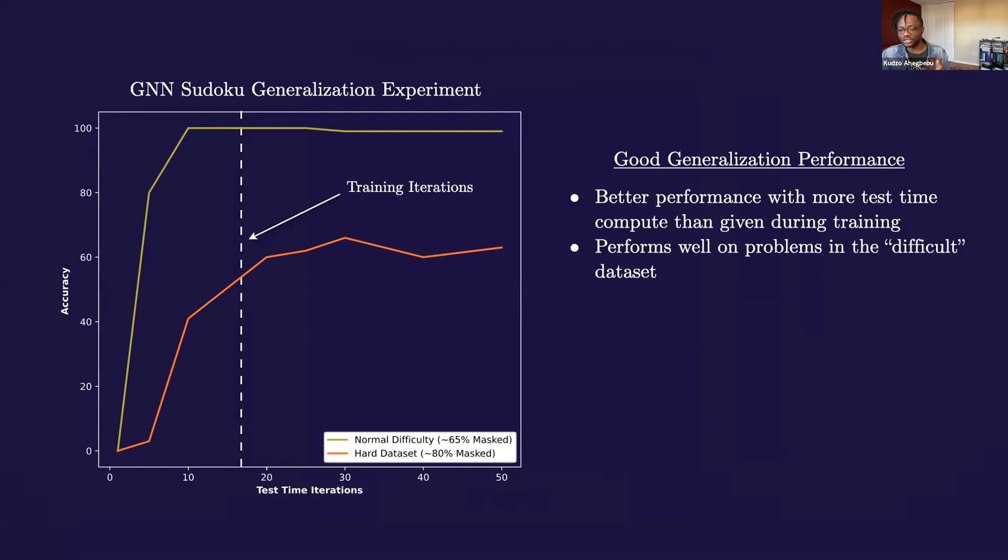One, as we increase the amount of iterations or test time compute, we see that the accuracy of the network improves in an almost monotonically increasing way. By the way, the accuracy here is measured on the sequence level, which means that I only count it if it gets the entire board correct. The other sense is that if we give the network problems that are harder than the ones it was trained on, it still performs well.